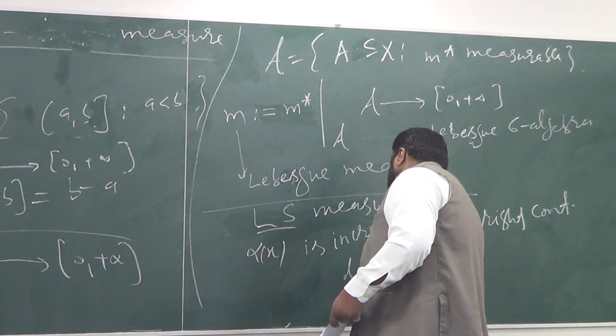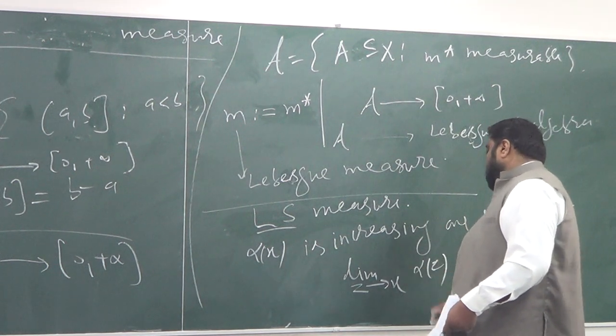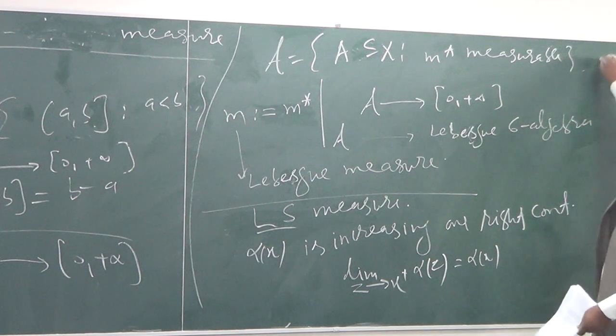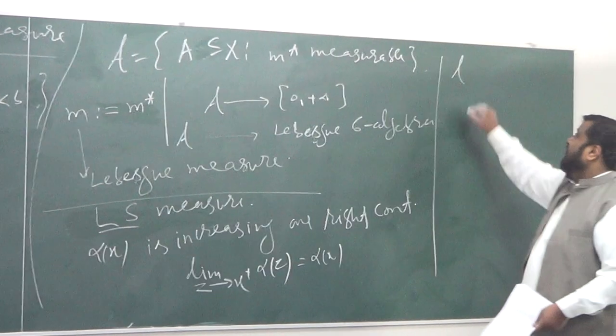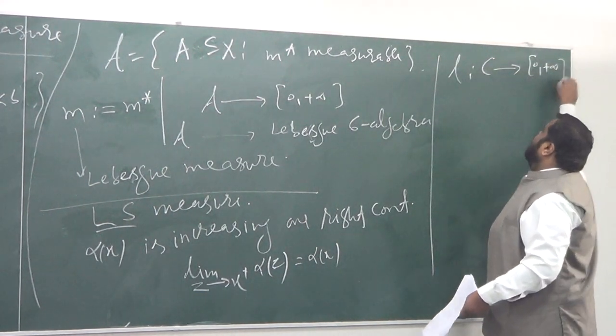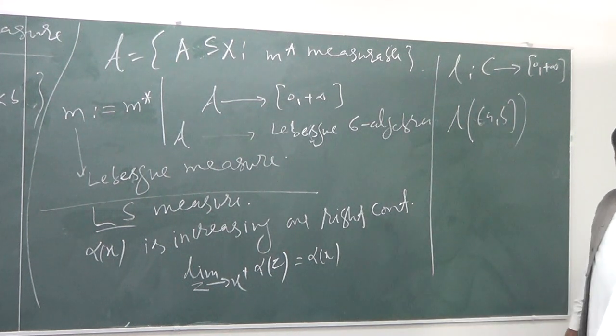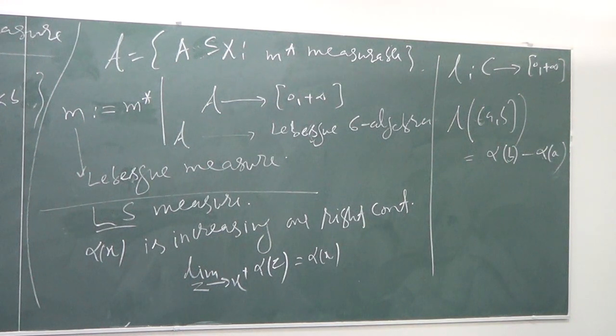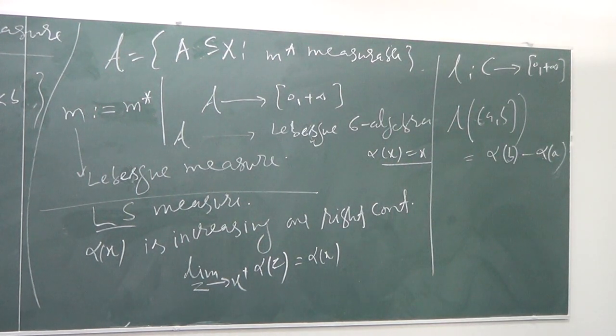Let us assume that α(x) is increasing and right continuous. What does it mean? It means that if I take limit z goes to x from the right of α(z), this must be same as α(x). If you have such kind of α, then define L on the C from [0, +∞), and L of [a,b) must be α(b) minus α(a). It's a bit more generalization. In other words, Lebesgue measure is nothing but α(x) equal to x, it's one particular case of it. Lebesgue-Stieltjes is generalization.